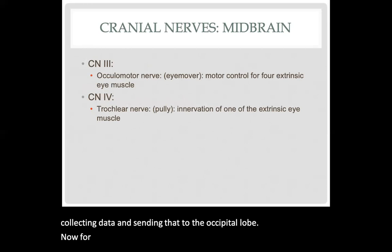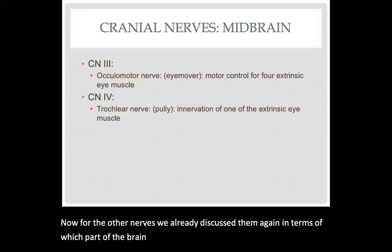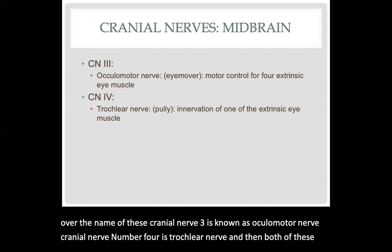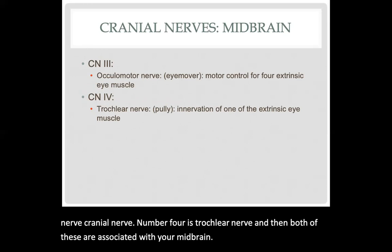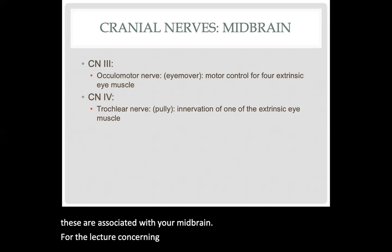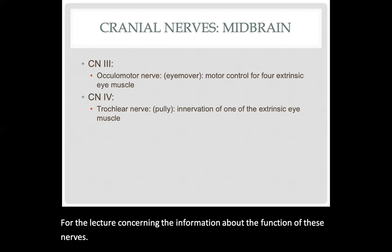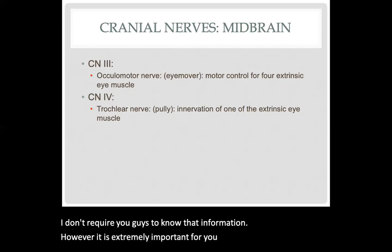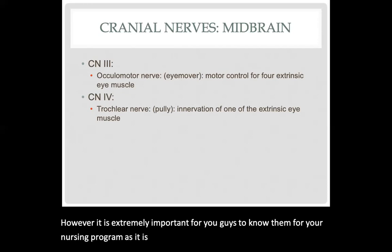For the other nerves, we already discussed which part of the brainstem they're associated with. Cranial nerve number three is known as the oculomotor nerve, and cranial nerve number four is the trochlear nerve — both associated with your midbrain. For this lecture, I don't require you to know the detailed functions of these nerves; however, it is extremely important for you to know them for your nursing program, as it is an essential component of the fundamental concepts of nursing.